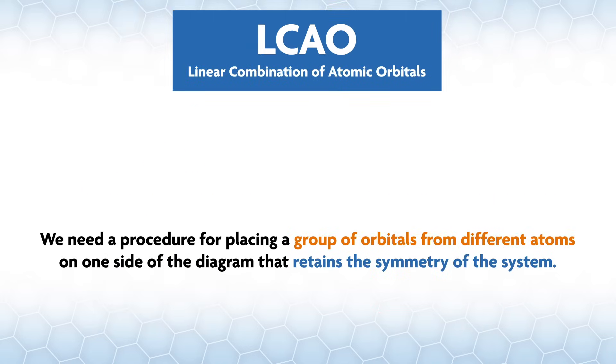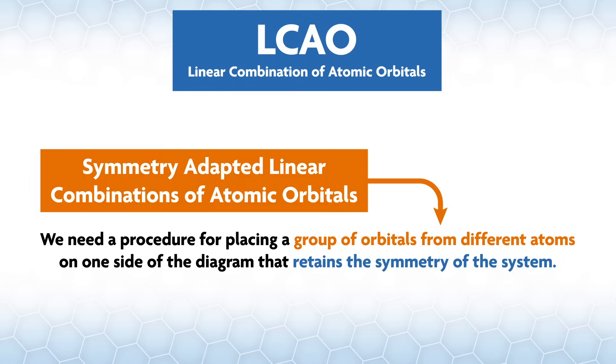To do this, we need a procedure for placing a group of orbitals from different atoms on one side of the diagram that retains the symmetry of the system. We call these groups symmetry adapted linear combinations of atomic orbitals, or SALC AOs, or just SALCs.